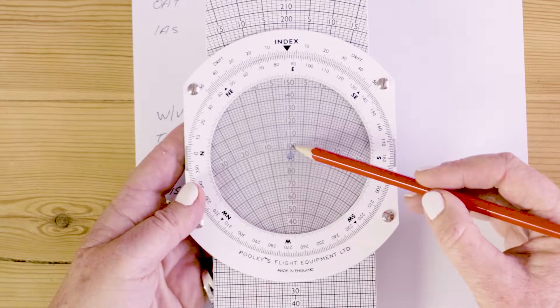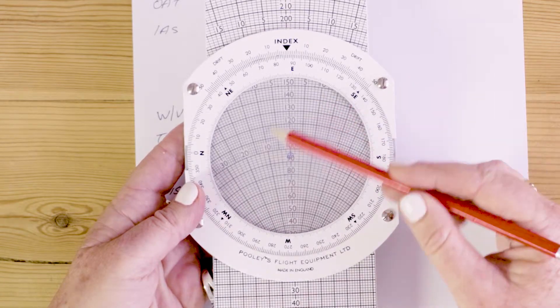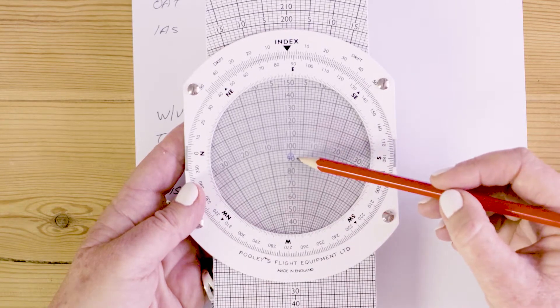Once we get above 100 it's 1, 2, 3, 4, 5, 6, 7, 8, 9, 10. Again to find your ground speed there is only three things you have to do.